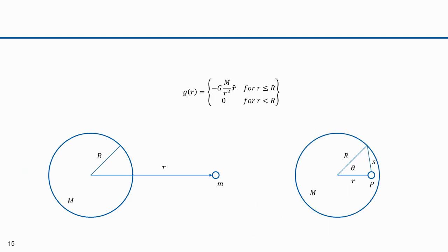I've proved mathematically that a uniformly distributed spherical mass exerts gravitational force as if it were a point mass at its center. For a test mass outside the sphere (little r > R), the force is −GM/r² times the unit vector r. For a test mass inside a spherical shell (little r < R), the force equals zero.